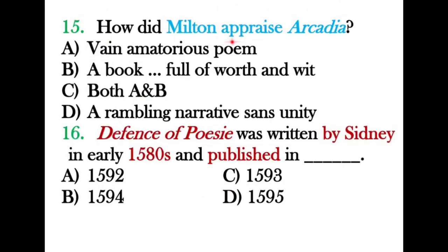Question fifteen: How did Milton appraise Arcadia? John Milton studied this work and was greatly influenced by it. He sometimes called it a 'vain amatorius poem' — amatorius relating to lovemaking — and also called it 'a book full of worth and wit.' The correct option is both A and B. He would not have called it a rambling narrative without unity.